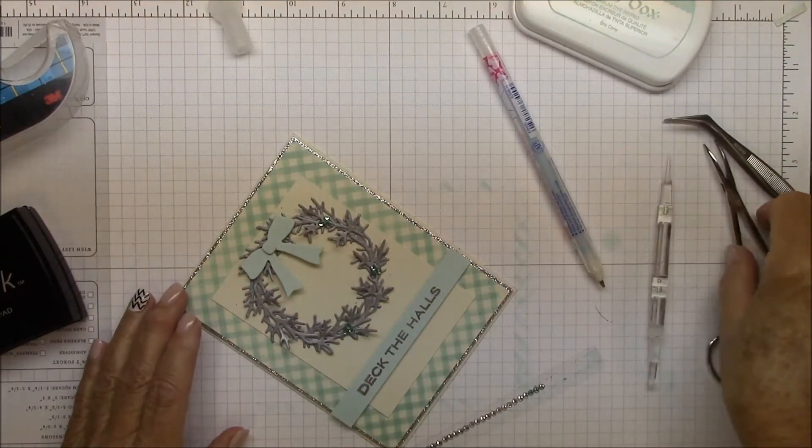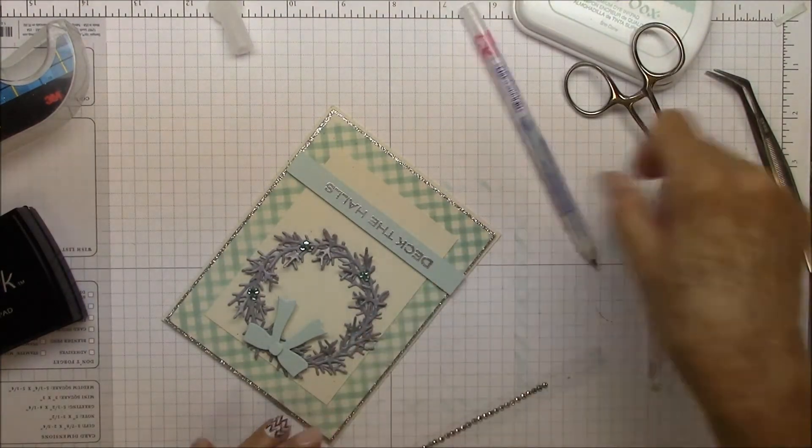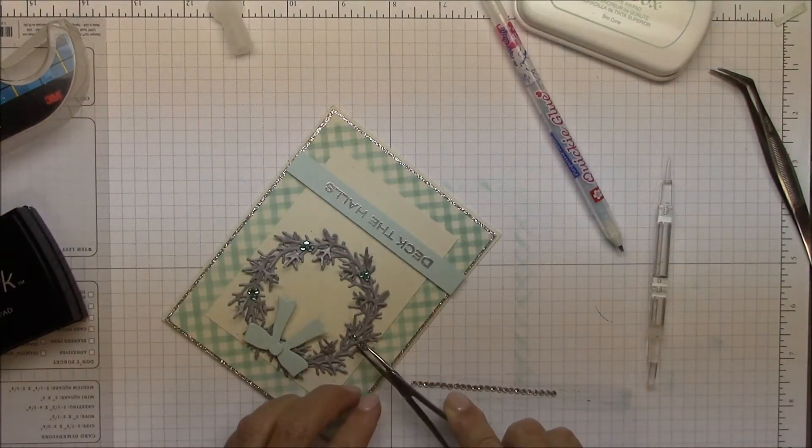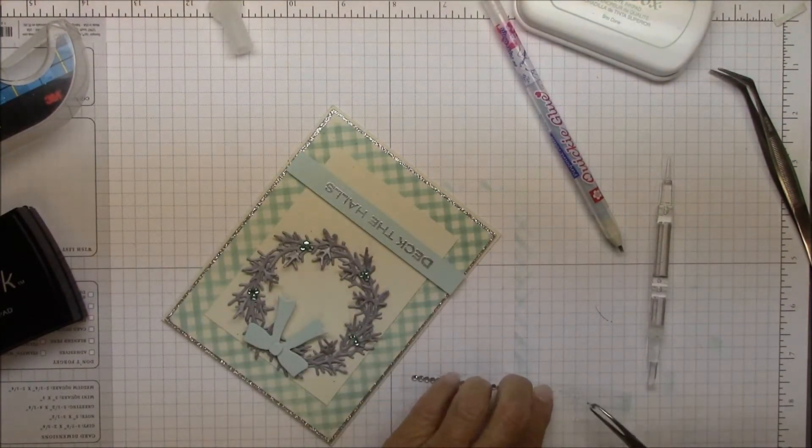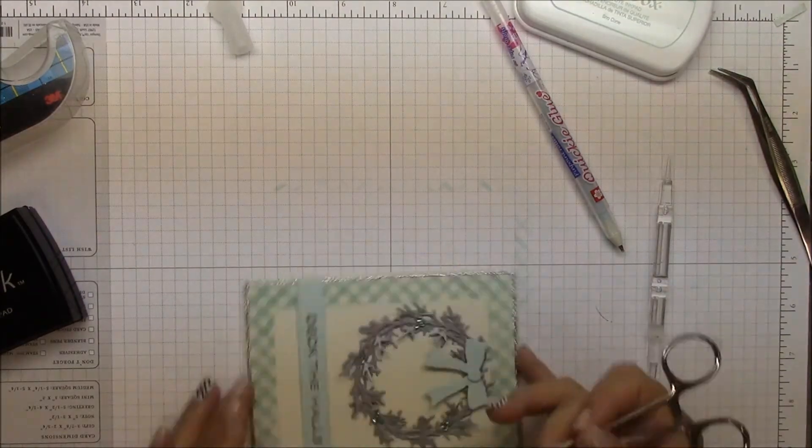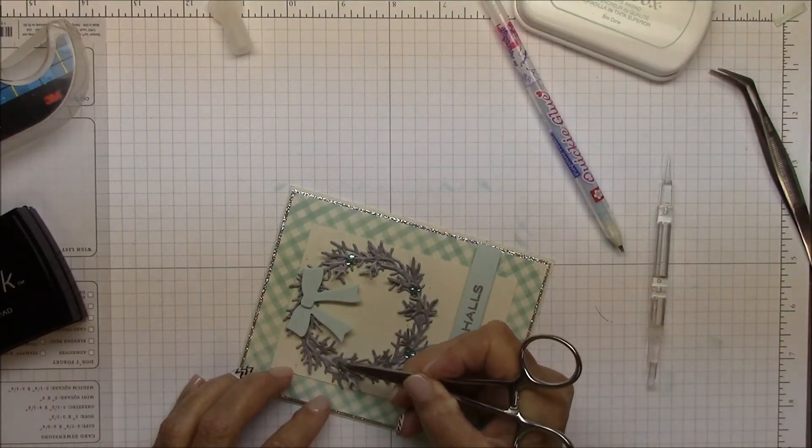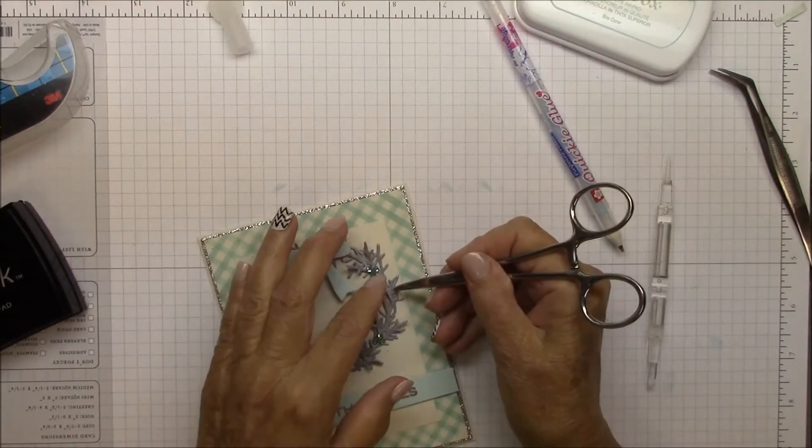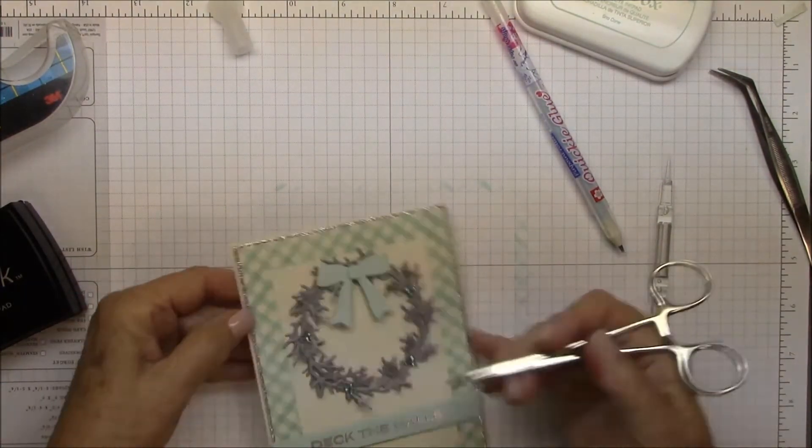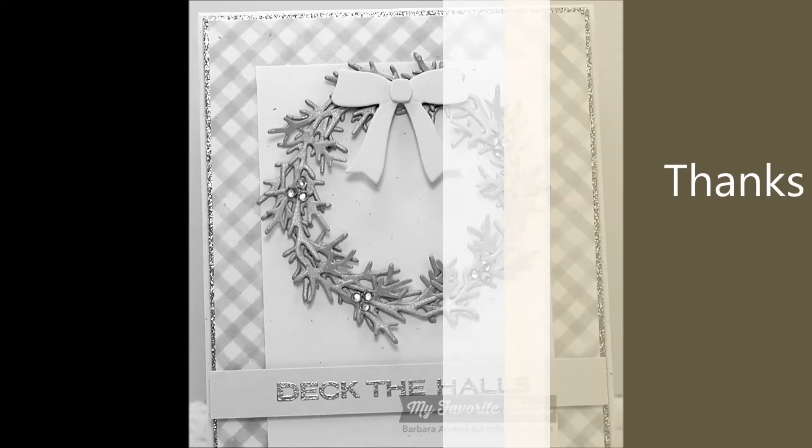I like an odd number of elements on something like this. So I'm considering the bow one of the elements, so I'm using four little clusters of the gem berries. Odd numbers just look better to me. Make sure they're seated properly. And that's it. So now I have another card to add to my Christmas card stash. Thanks for watching.